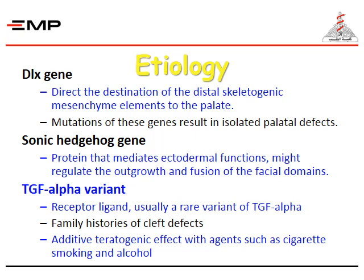The Sonic hedgehog gene is a protein that mediates ectodermal functions and might regulate the outgrowth and fusion of the facial domains. Transforming growth factor alpha is a receptor ligand — usually a rare variant. Family histories of cleft defects are common with this gene. An additive teratogenic effect with agents such as cigarette smoking and alcohol may contribute as well.